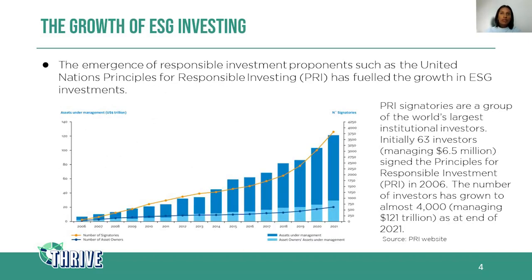Talking about the growth of ESG investing, which has been quite pronounced over the last decade or two: this chart shows the growth in PRI signatories. PRI stands for Principles of Responsible Investing, and they're a group of the world's largest institutional investors supported by the United Nations. In 2006 they started with 63 signatories, and in just 15 years it grew to almost 4,000. As at end of 2021, the value of funds they manage grew from $6.5 million to $121 trillion — a significant growth.